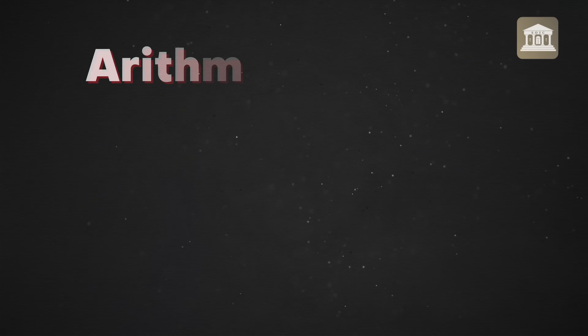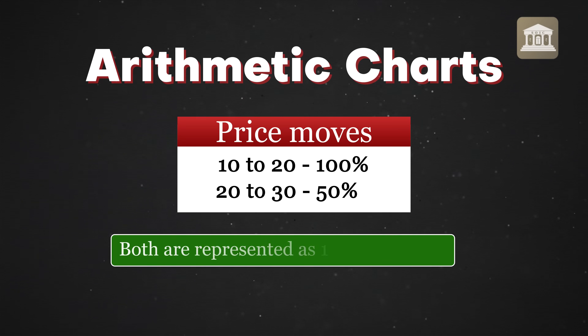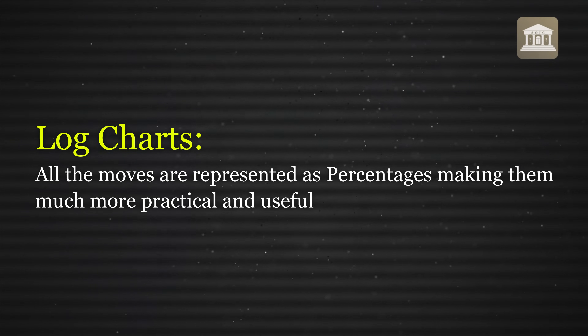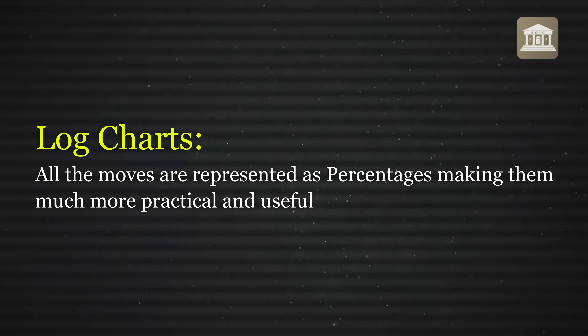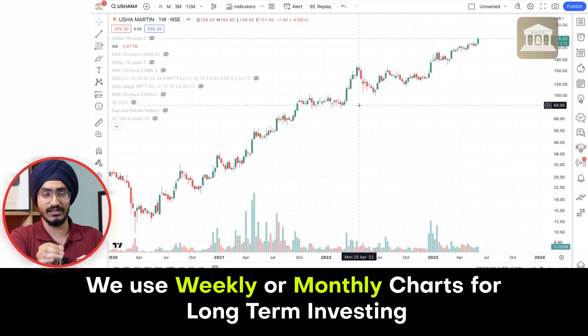In TradingView, he recommends using log charts versus arithmetic charts. In arithmetic charts, a move from 10 to 20 is a 100% move and from 20 to 30 is a 50% move, but the chart treats them as equal — whereas log charts correctly represent all moves on a percentage basis. We are using weekly or monthly charts, which he recommends for analyzing stock trends.